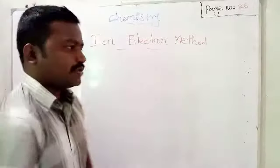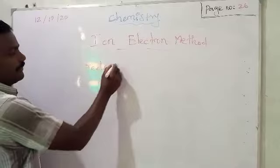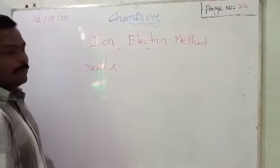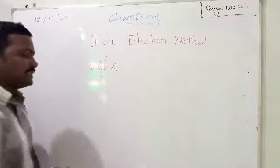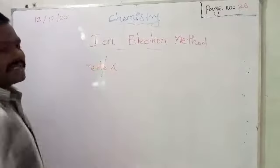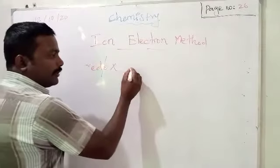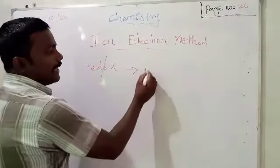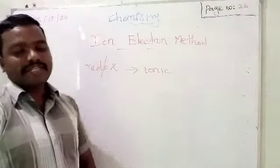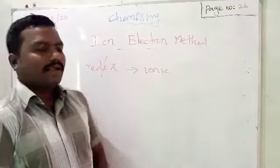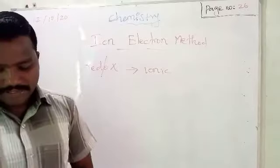What do we mean by ionic redox reaction? We know redox reaction — redox reaction means both oxidation as well as reduction take place in a single equation; that equation is called a redox equation. In that, we are going to take only the ionic part for this balancing reaction. That is why we take ionic redox reactions in this method.